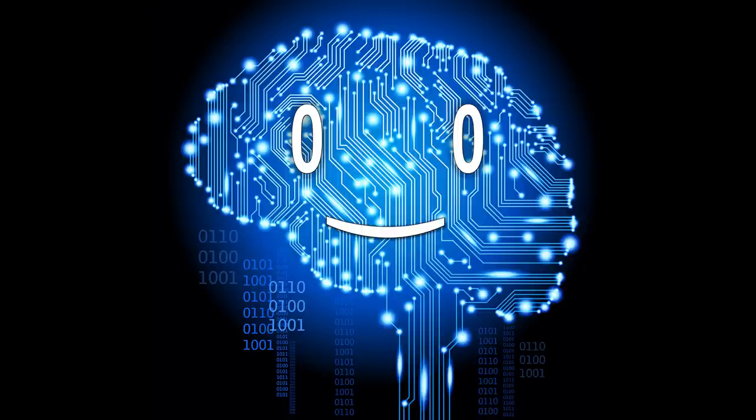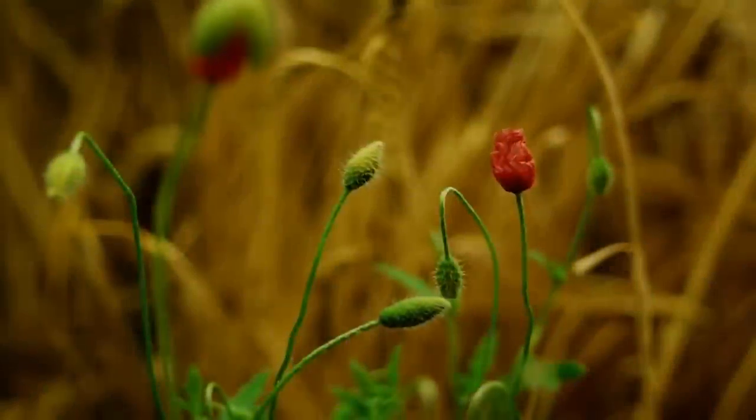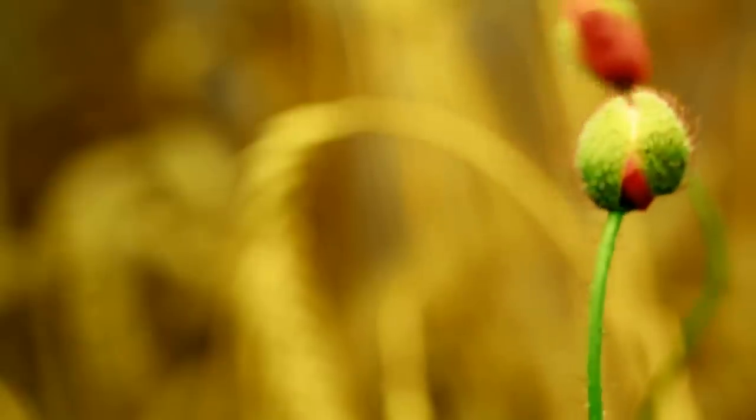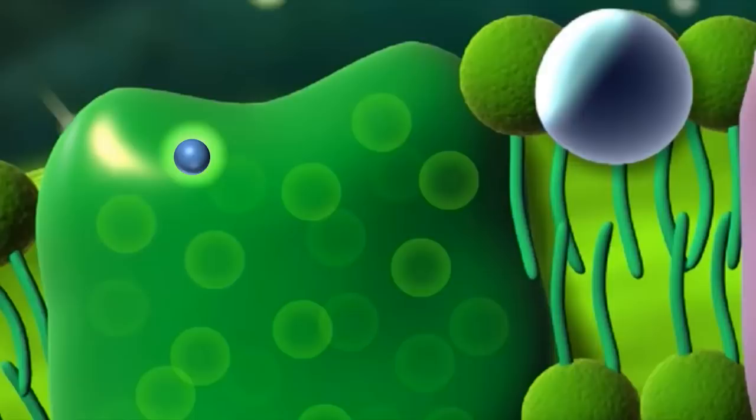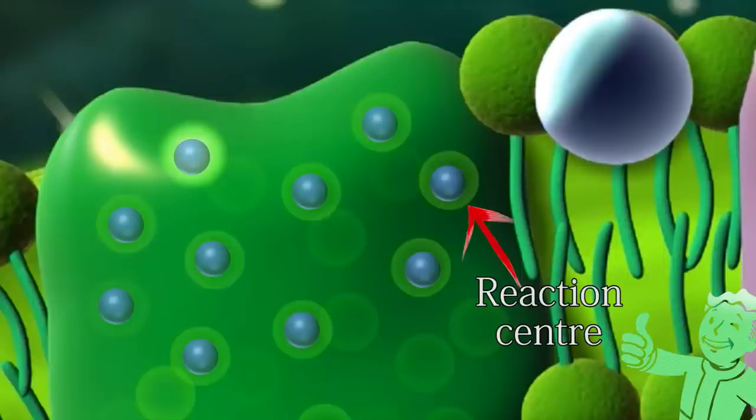This principle states that a particle can be in various places at the same time, thus occupying multiple positions at once. And it turns out that plants and algae employ quantum superposition so that the electron can simultaneously travel among all possible paths. That way, it always gets to the reaction center every time through the shortest path.